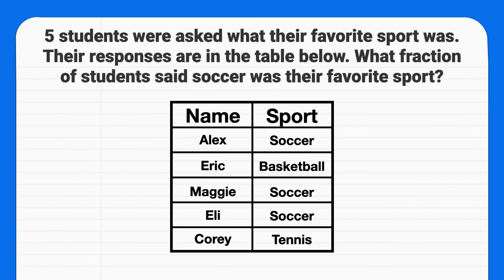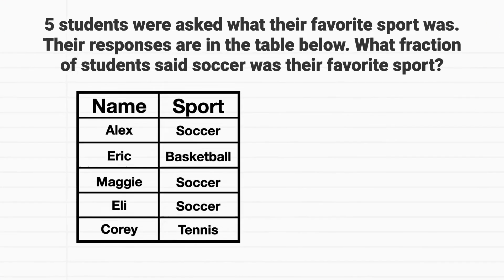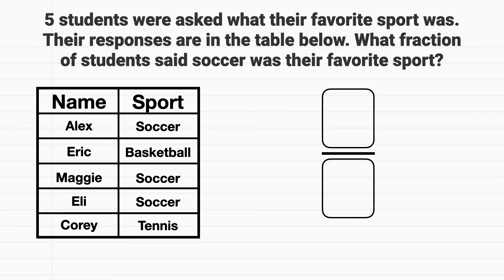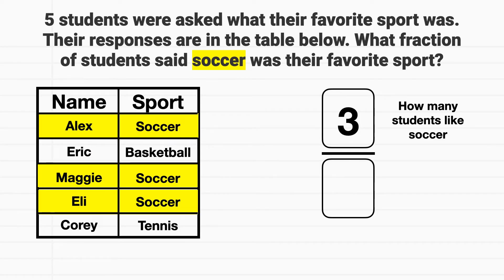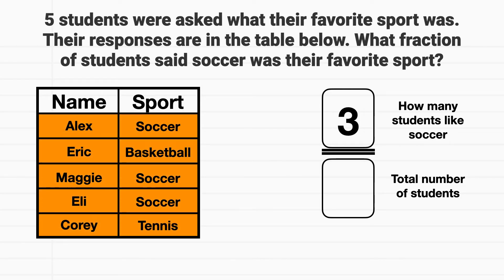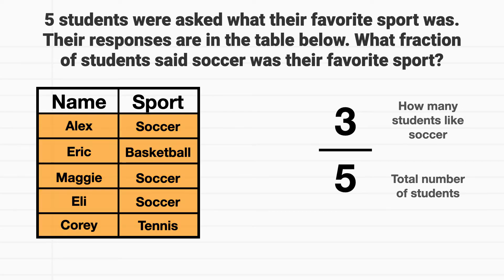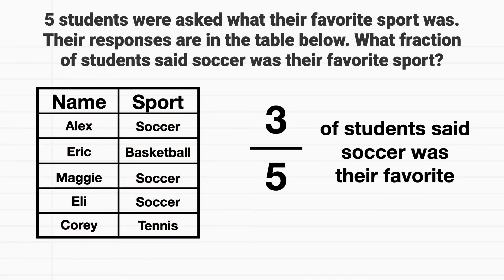Here's another problem to practice with. Five students were asked what their favorite sport was. Their responses are in the table below. What fraction of the students said soccer was their favorite sport? Let's solve this piece by piece. The numerator will be the number of students that said their favorite sport is soccer. We can count that 1, 2, 3 students said soccer was their favorite sport. The denominator will be the total number of students, which here is 5 students. The denominator is 5. We can say 3 fifths of the students said soccer was their favorite sport.